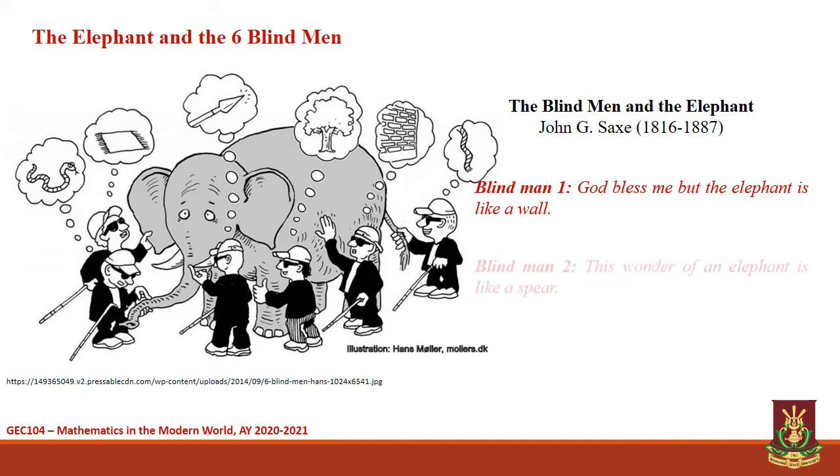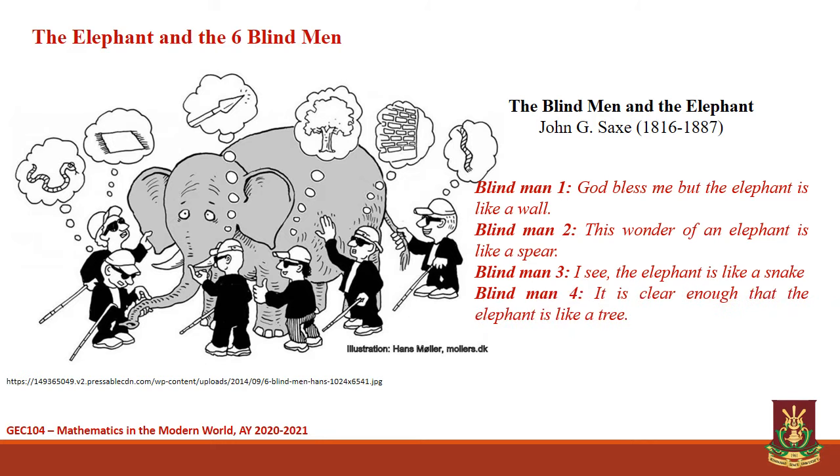The second who touched the tip of its tusk said that the elephant is like a spear. When the third approached and happened to take the trunk, he concluded that the elephant is like a snake. The fourth then reached out his hand and touched the leg and said that the elephant is like a tree.